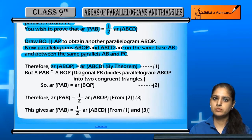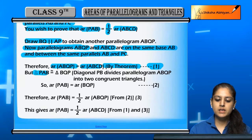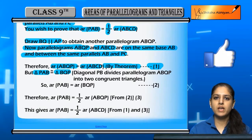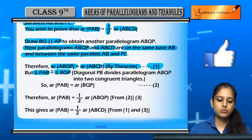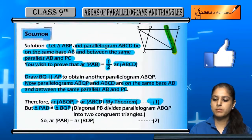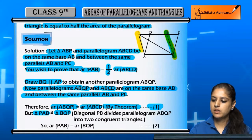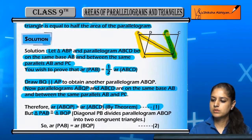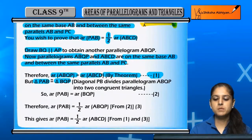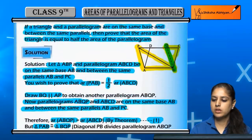By the theorem, the area of parallelogram ABQP equals the area of parallelogram ABCD. Now, the diagonal PB of parallelogram ABQP divides it into two congruent triangles: triangle PAB and triangle BQP.